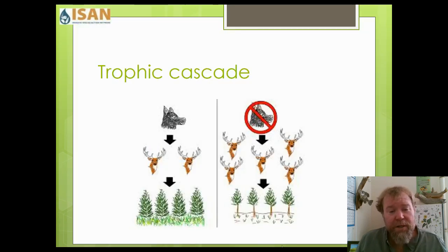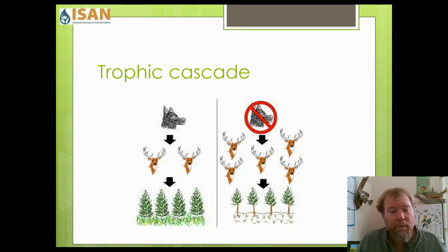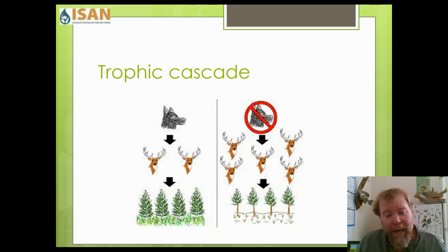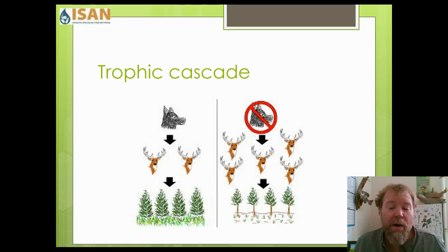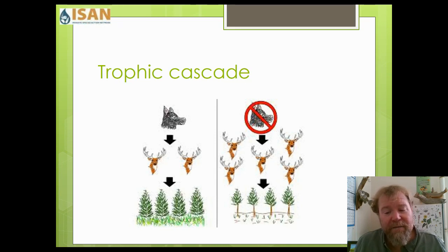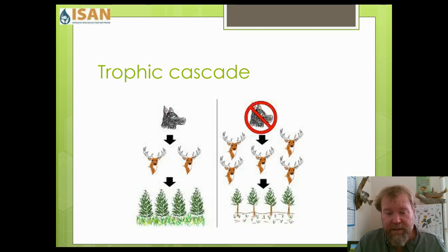This picture shows what a trophic cascade is. On the left, it shows the presence of wolves — when wolves are present, you have a reasonable population of elk, and because of that, you have a healthy forest and healthy grassland. The picture on the right shows that without wolves, you have an overabundance of elk, and because of that overpopulation, you have an unhealthy grassland and unhealthy forests.